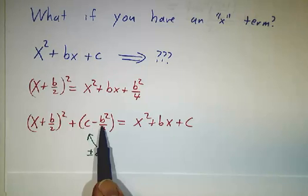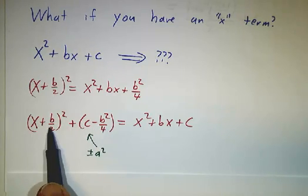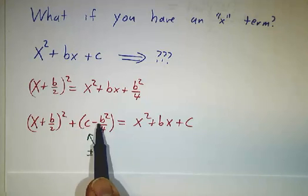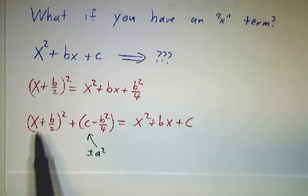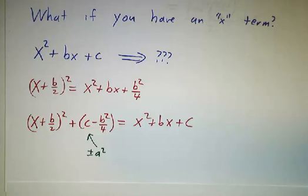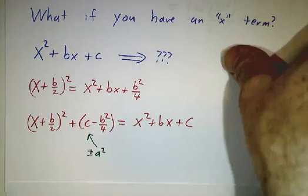So instead of getting an x squared plus a squared, you get x plus something squared plus a squared, or x plus something squared minus a squared, or a squared minus x plus something squared. So let's work some examples with that.